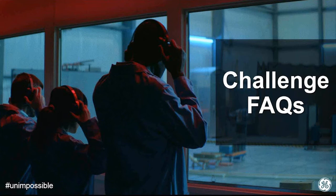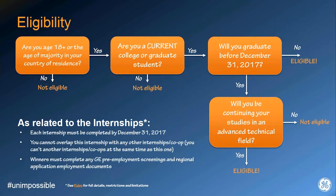Now we're moving into the Challenge FAQs — questions fielded from the Nine Sigma Provider Help Desk and the Challenge Forum. We've received many questions around eligibility. First, you need to be age 18 or older, or the age of majority in your country of residence. Second, you must be a currently enrolled college or graduate student — not someone about to start college in the fall, and not someone who graduated years ago.